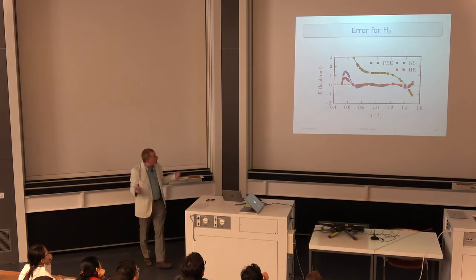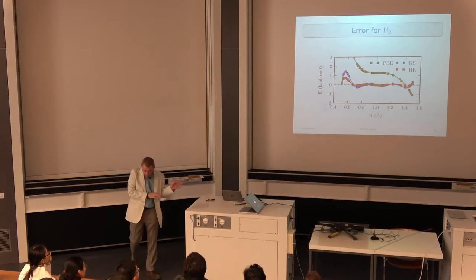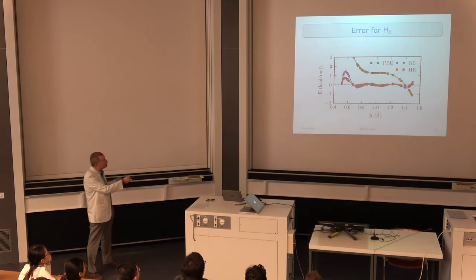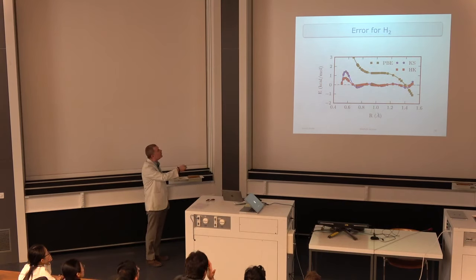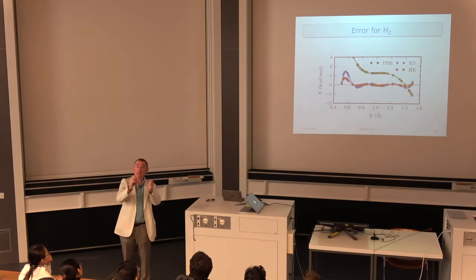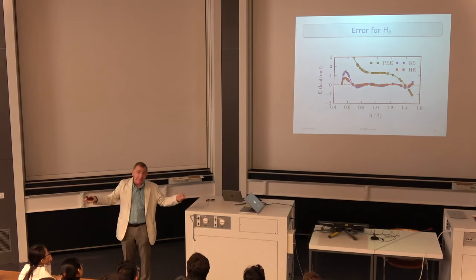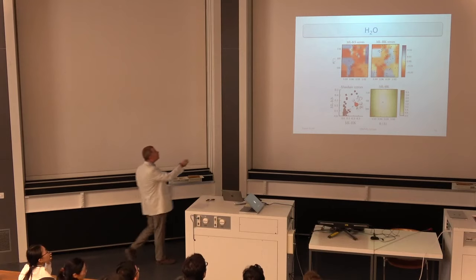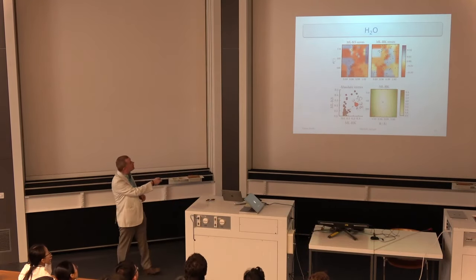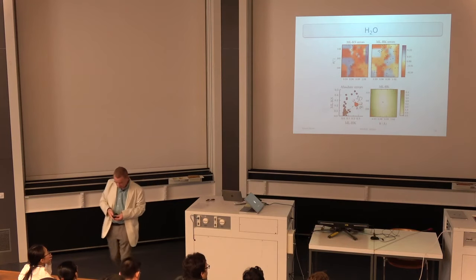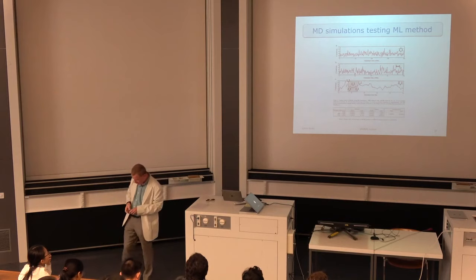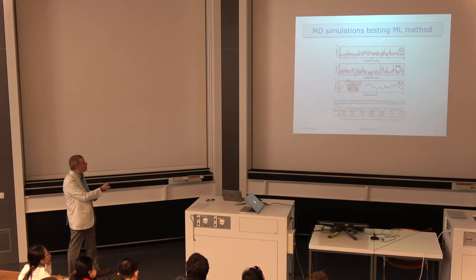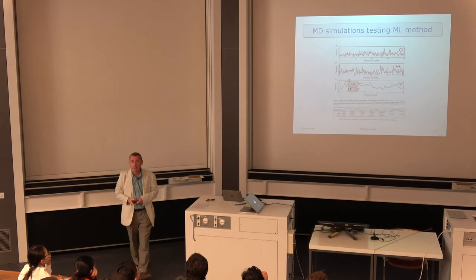First we tested on the H2 atom — all these calculations use PBE for exchange-correlation but try to bypass solving the Kohn-Sham equations. Our new map introduces errors much smaller than those of PBE exchange-correlation. Then we did H2O and obtained a potential energy surface, sampling points randomly. When we submitted, the referees said a potential energy surface wasn't good enough and asked us to run molecular dynamics — so we did.